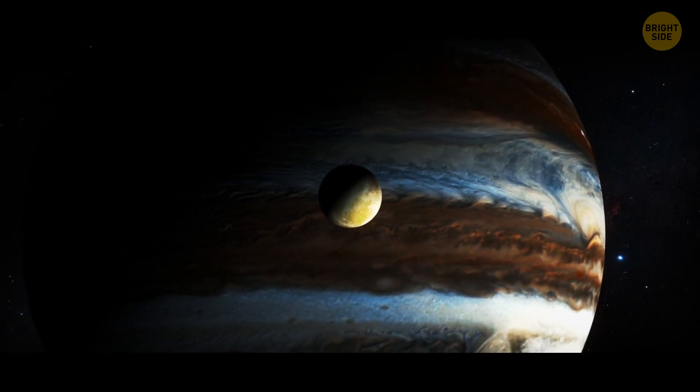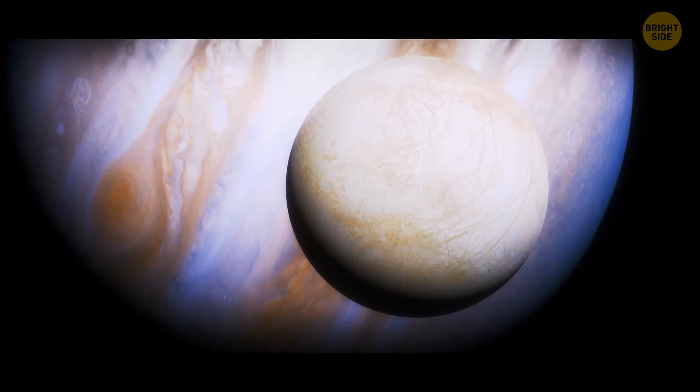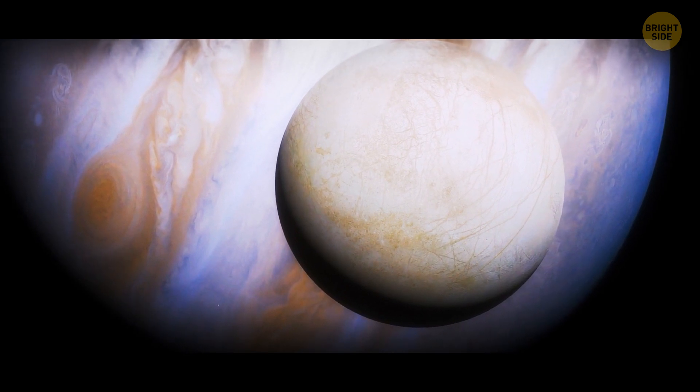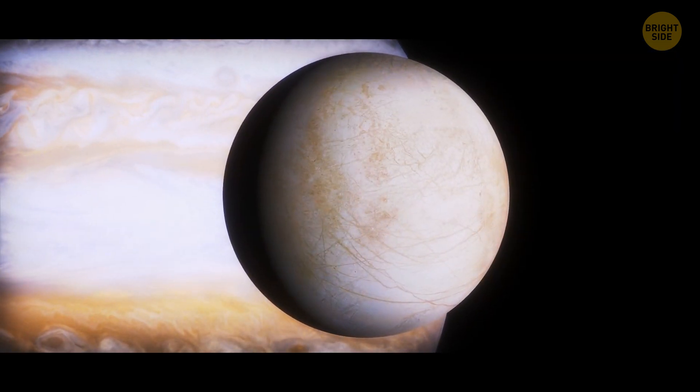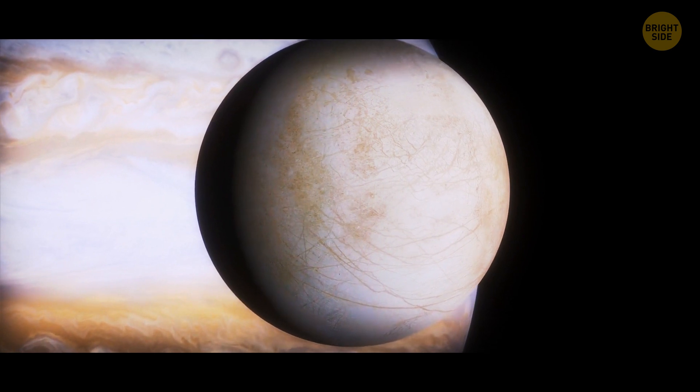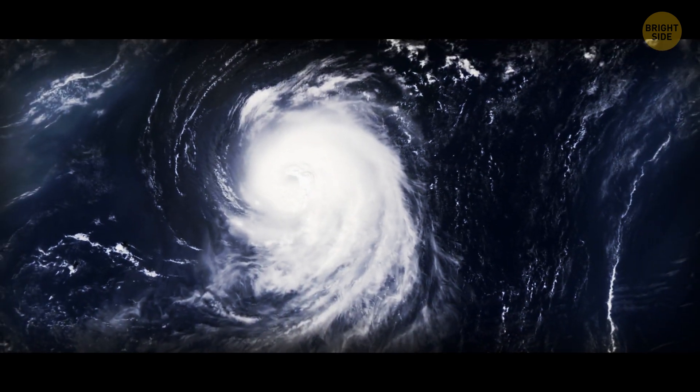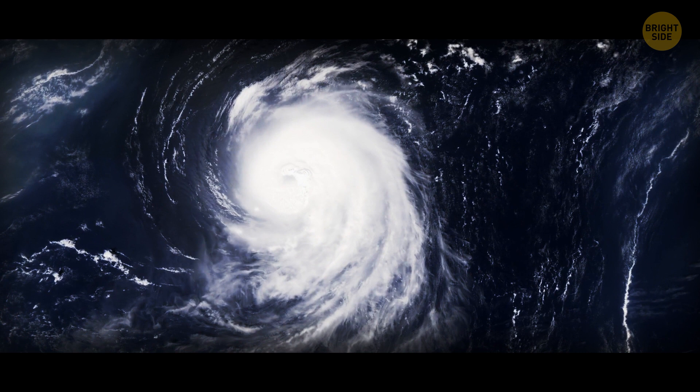Europa, one of Jupiter's moons, could be one of the most likely candidates we know about that could contain life. It probably has an entire ocean under its frozen and cracked surface. It could have twice as much water as all oceans on our planet together.